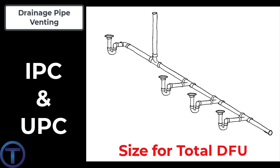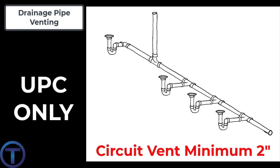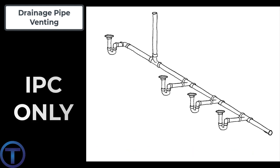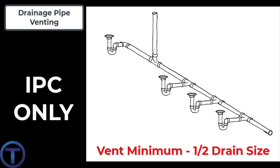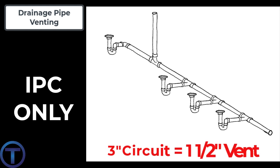When it comes to sizing a circuit vent, both the International and Uniform Plumbing Codes state that the size must account for the total drainage fixture units connected to the circuit. This is basic drainage sizing from chapter 7 in either codebook. There is one additional note from the Uniform Plumbing Code: the circuit vent must be a minimum of 2-inch pipe. The International Plumbing Code states that a vent must be at least half the diameter of the drain it is serving — so a 3-inch circuit could have a 1.5-inch circuit vent.